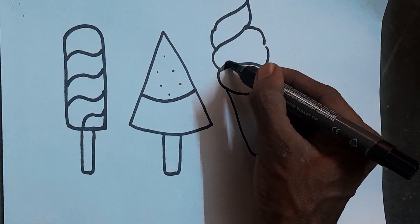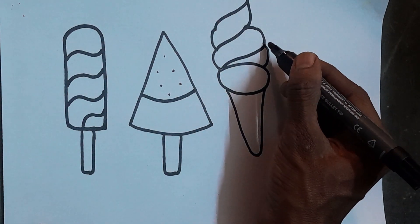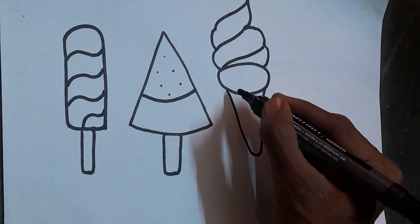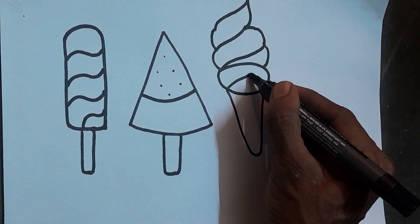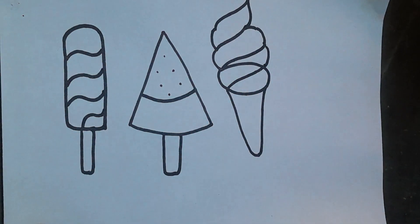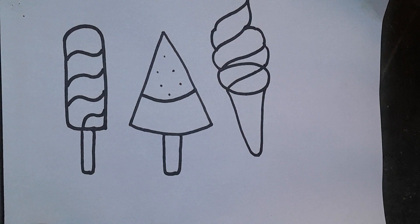One, two, three, splashing in the sea. Four, five, six, naughty little chicks. Seven, eight, nine, swinging on the vine.